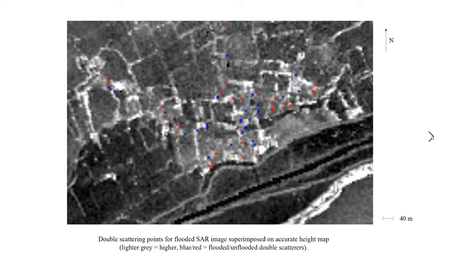This shows the double scattering points for the flooded SAR image, superimposed on our accurate height map. The blue points are the flooded double scatterers, while the red points are the unflooded ones, and lighter grey equals higher elevation.